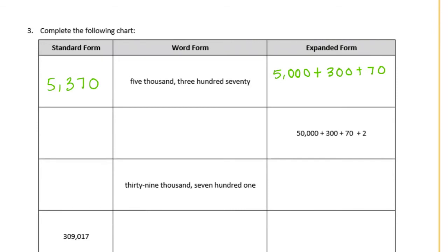Here we have fifty thousand plus three hundred plus seventy plus two. So I'm going to start with standard form. We have fifty in the ten thousands place. Let's look for anything in the thousands place — I don't see anything, so there's going to be a zero in the thousands place. In the hundreds we have three hundred, in the tens there's a seventy, so seven, and then a two in the ones place. So that says fifty thousand three hundred seventy-two.